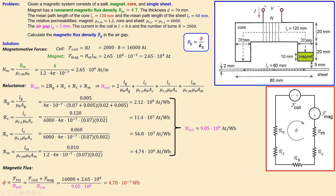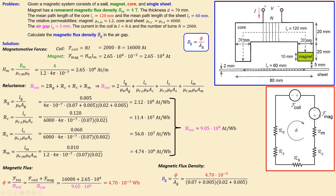We now have the flux and the gap cross-sectional area. The magnetic flux density in the air gap B_G equals phi divided by the cross-sectional area of the gap. Calculating this gives B_G = 2.51 tesla. This is the final answer, obtained by following the structured approach from the end formula back through the required intermediate values.